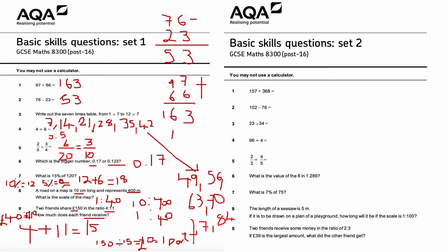We are now looking at set two. Question number one: 157 plus 368. Using column addition: 7 plus 8 is 15, write 5 carry the 1. 5 plus 6 is 11, plus that extra 1 is 12, carry the 1. 1 plus 3 is 4, plus that 1 is 5. So the answer is 525.